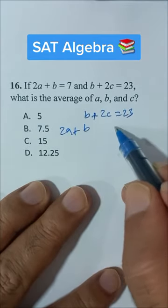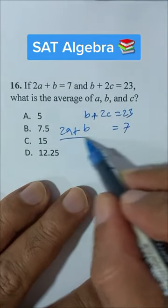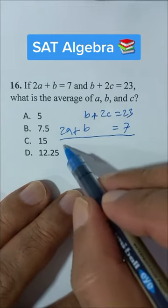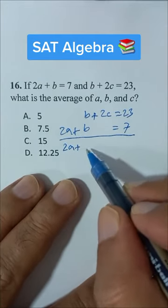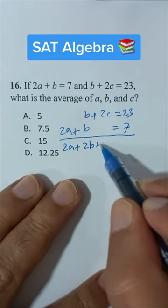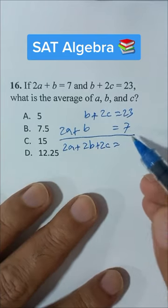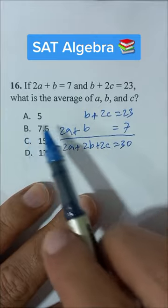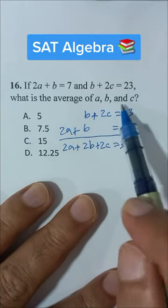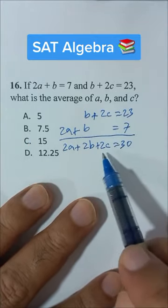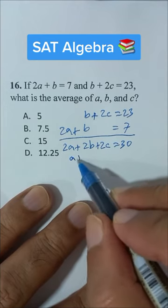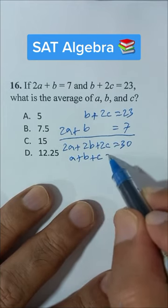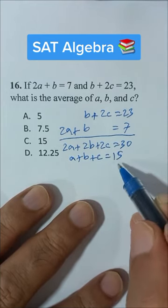If we add these two equations, we have 2a plus 2b plus 2c equals 23 plus 7, which is 30. Now what is the average of a, b, and c? If I divide every term by 2, I will get a plus b plus c equals 15.